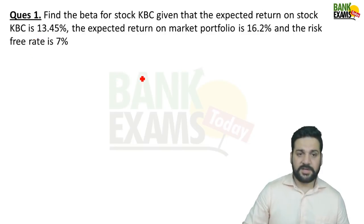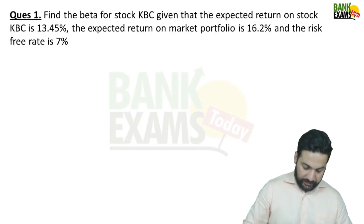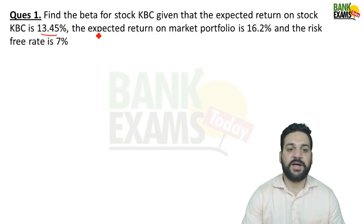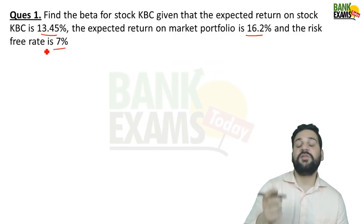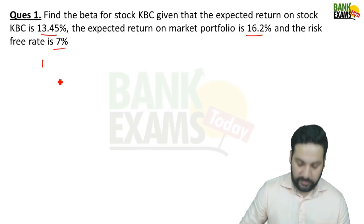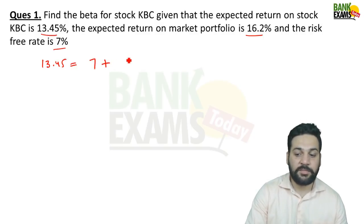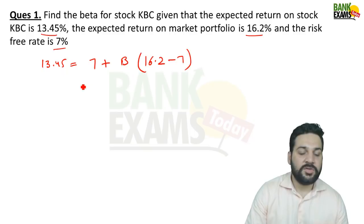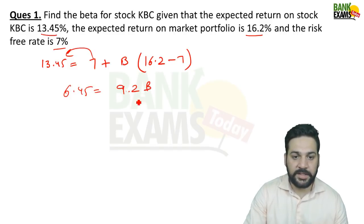Question 1: Find the beta for stock KBC given that the expected return on the stock is 13.45%, the expected return on the market portfolio is 16.2%, and the risk-free return is 7%. Plugging into the CAPM formula: 13.45 = 7 + β(16.2 − 7). This gives 6.45 = β × 9.2, so β = 6.45 ÷ 9.2.